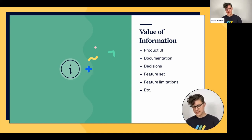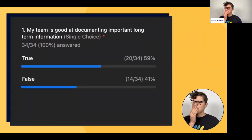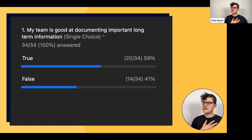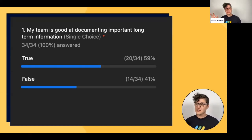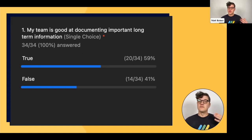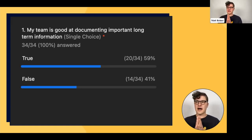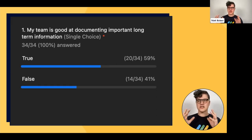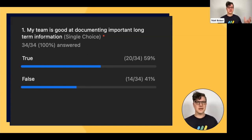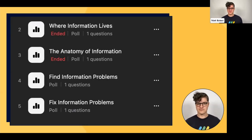Looking at the poll results: almost an even split. 59% of you think your team is good at documenting long-term information — that made my day. For the 41%, documenting long-term information is very hard to do. In another life I was a tech writer, and pulling stuff out and making it digestible and usable for everyone is genuinely difficult. But I'm encouraged to see almost 60% saying your teams are already pretty good at this, because once you've found your information, you can get it to the people who document it so well.